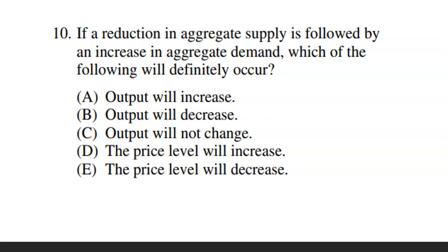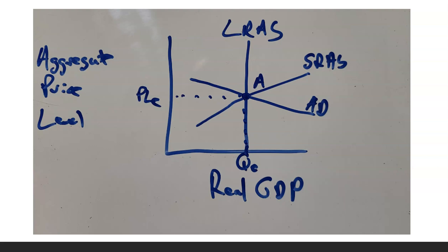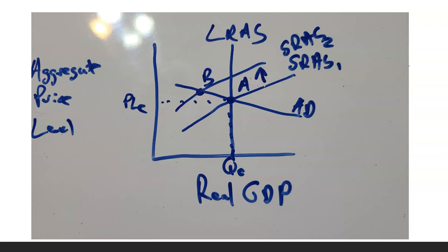Question 10: I'll show some graphs here. If aggregate supply is reduced, that's a shift to the left — aggregate price level goes up and GDP goes down. Now if aggregate demand increases on its own, that raises both price level and GDP. The question asks: what happens if aggregate supply decreases AND aggregate demand increases? Here's economy at long and short-run equilibrium at point A. The first shift — a reduction in aggregate supply — shifts left, causing stagflation.